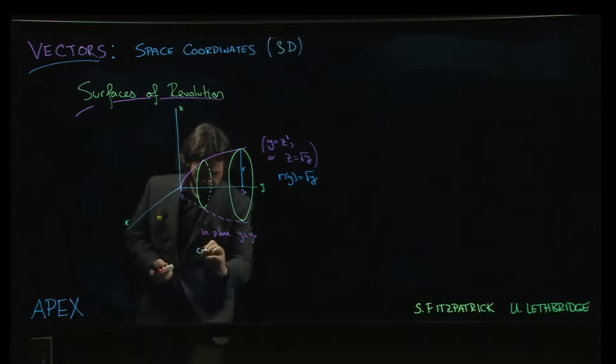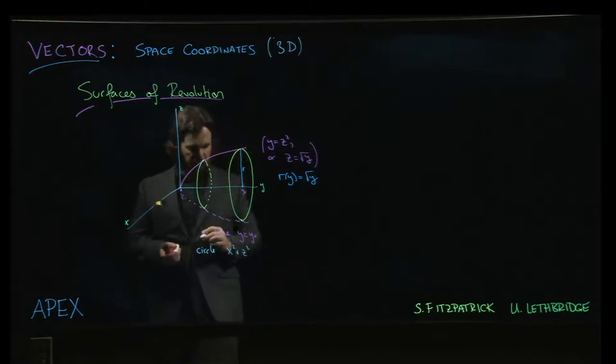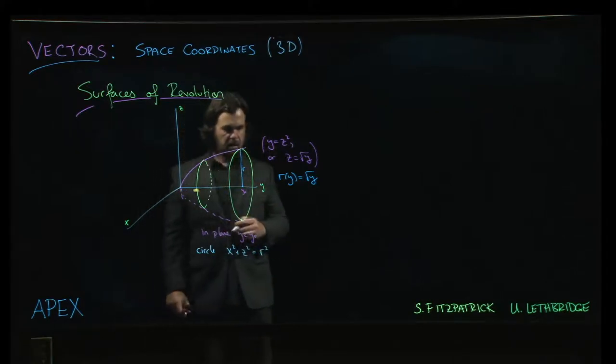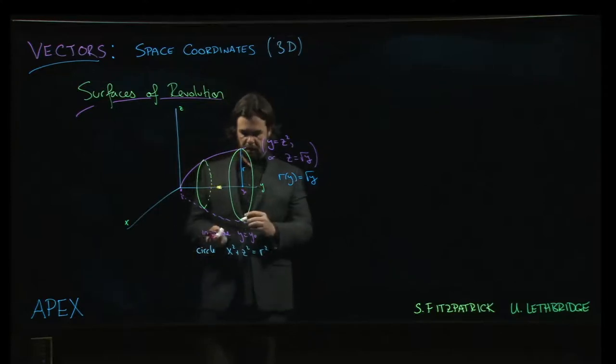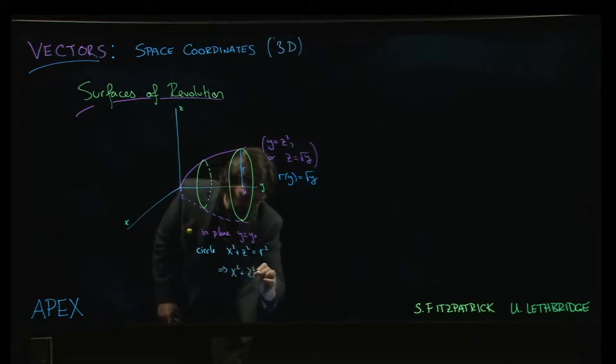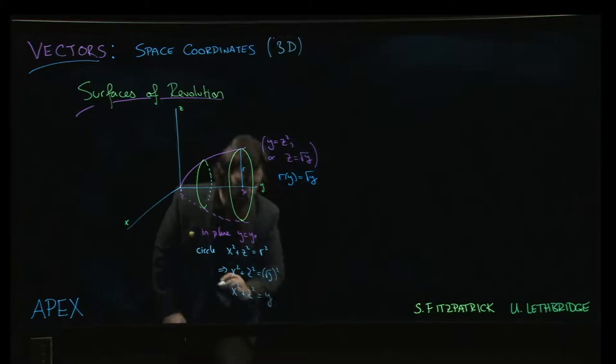which is going to be x squared plus z squared equals r squared, where that r happens now to be the square root of y, right? And so what we get is that this is x squared plus z squared is equal to the square root of y squared. Or x squared plus z squared is equal to y.